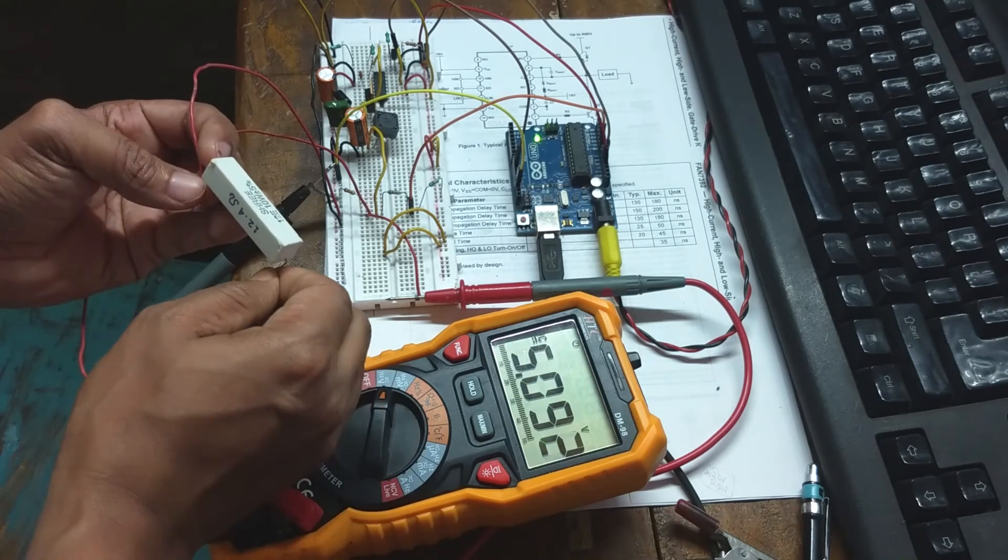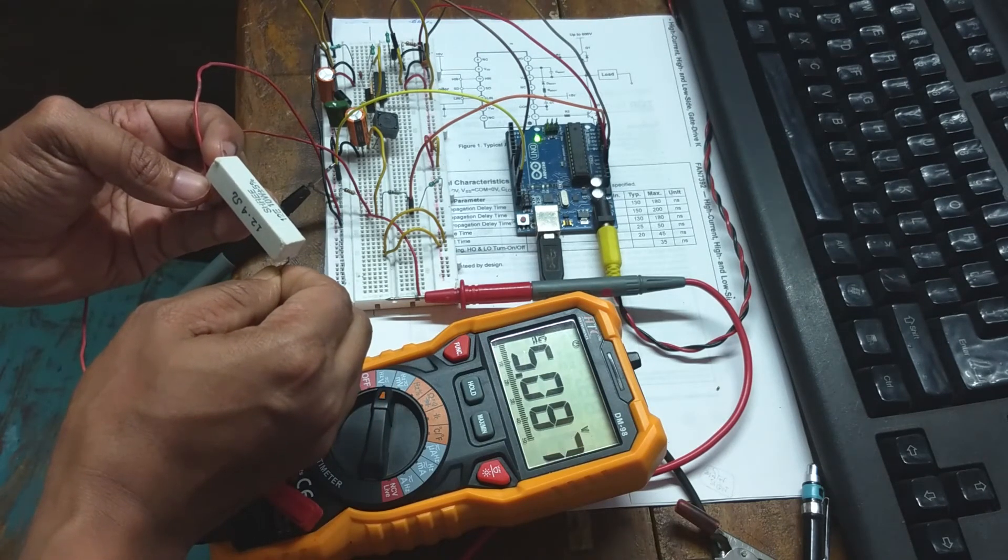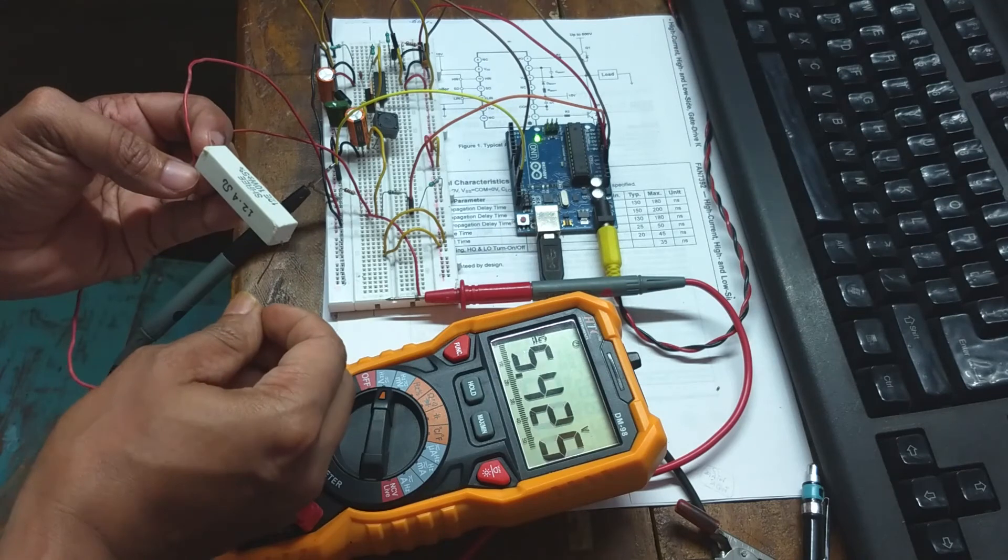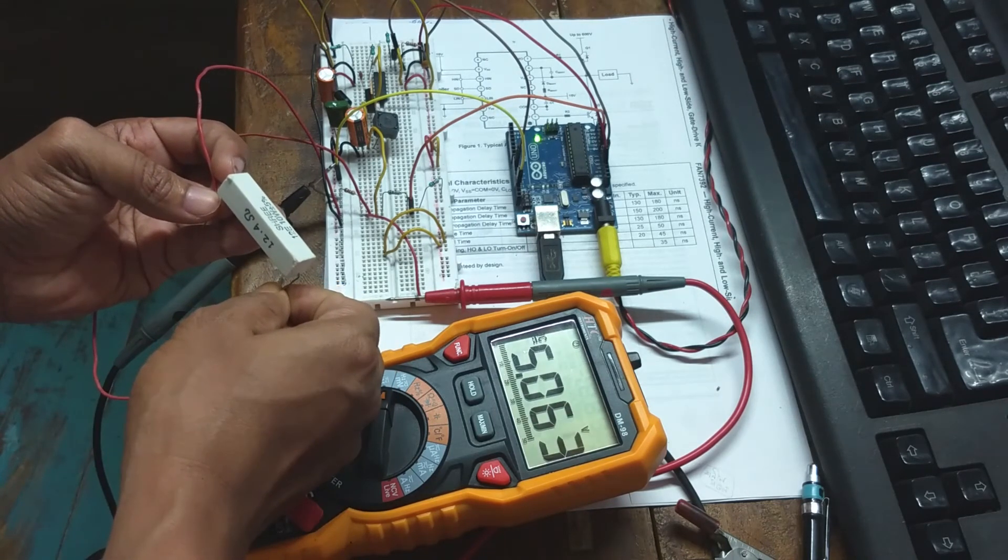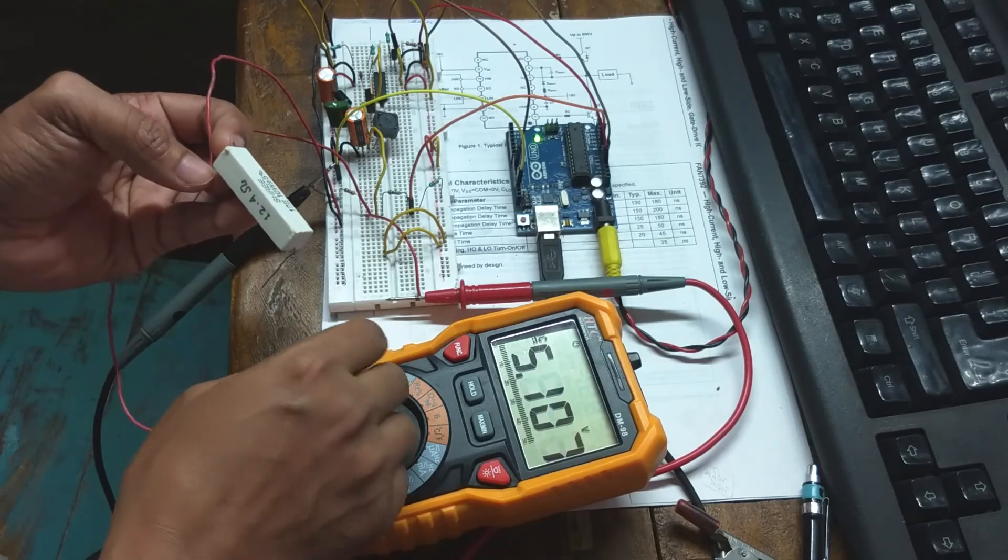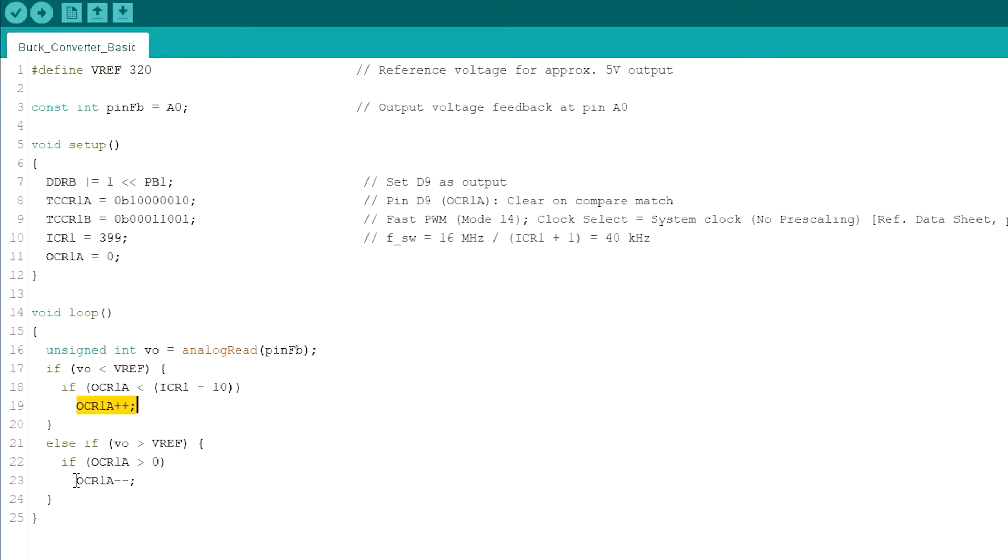Although the voltage regulation is ok, I noticed a large overshoot and undershoot in the output voltage while the load is being changed. This is because I am increasing or decreasing the duty cycle at a constant rate to correct the output voltage.